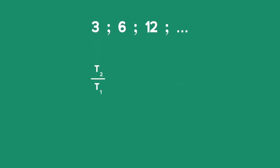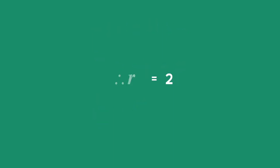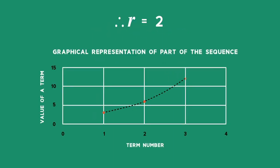Using the sequence 3, 6, 12, and so on, we find that term 2 divided by term 1 is equal to 6 divided by 3, which equals 2. Term 3 divided by term 2 is equal to 12 divided by 6, which again equals 2. Therefore, the sequence is geometric and the common ratio for the geometric sequence is equal to 2.